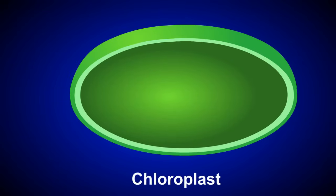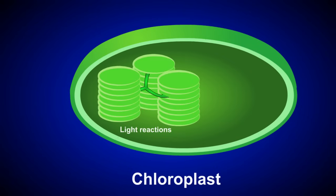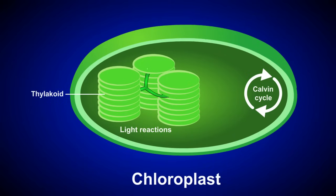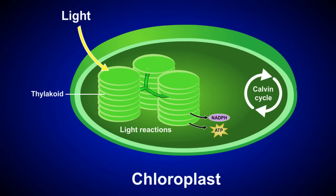Photosynthesis consists of two primary steps: the light reactions and the Calvin cycle reactions. Both steps occur within the chloroplast. The light reactions occur within the thylakoid of the chloroplast, where special pigments absorb light energy and transfer it to high energy electrons, which ultimately produce ATP and the electron carrier NADPH.